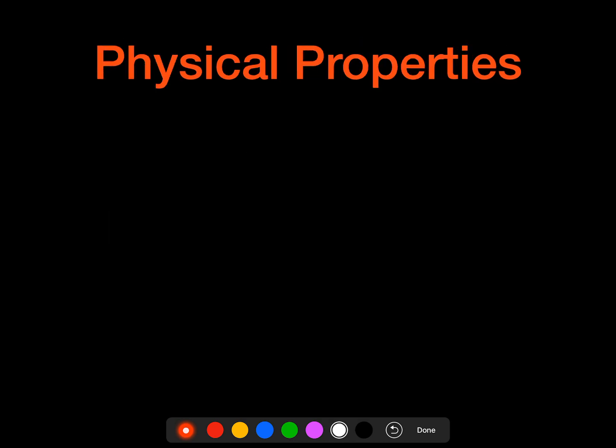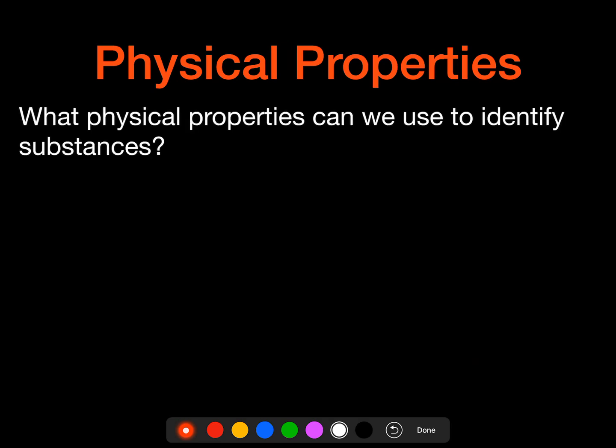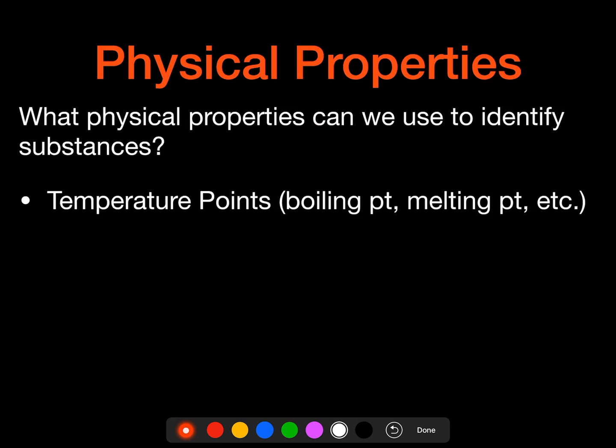So what physical properties can we use to identify substances? A lot of times we use temperature points - boiling point, melting point, freezing point. We can use the state of matter under certain conditions, and a lot of times we'll look at those phase changes. When do they happen? How are they happening?